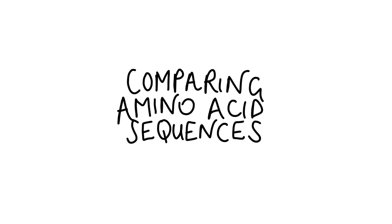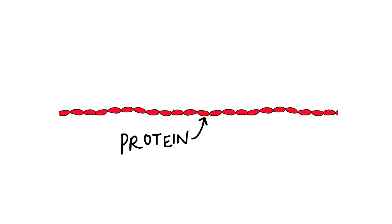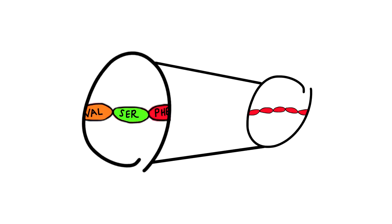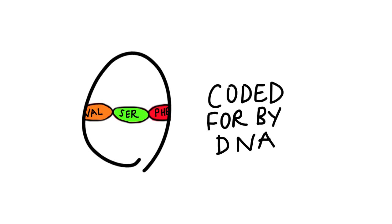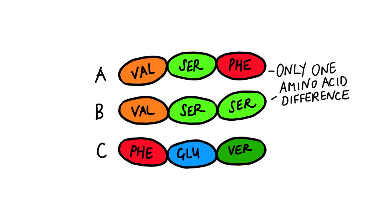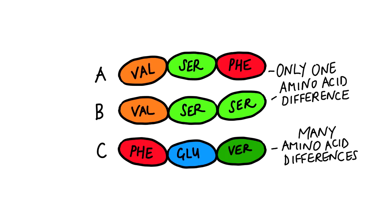Comparing amino acid sequences. Proteins are made by amino acids. The sequence of amino acids in protein is coded for by the base sequences in DNA. Related organisms have similar DNA sequences, therefore they will have similar amino acid sequences in their proteins.